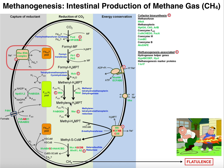This methylene group that's present on here is going to be totally reduced to a methyl group. This is catalyzed by methylene-tetrahydromethanopterin reductase. Again, this is also going to use the electrons from F420 — taking from that reduced F420 pool — and we're going to reduce the methylene group into a methyl group, giving us this molecule called methyl-tetrahydromethanopterin. Very similar to what we had for methyl-tetrahydrofolate.